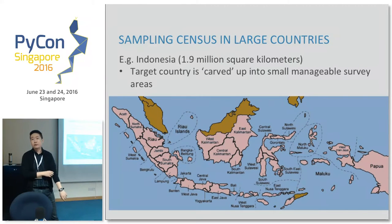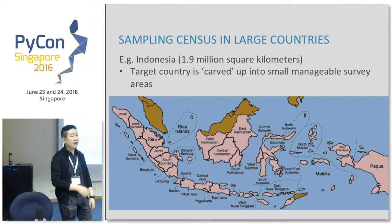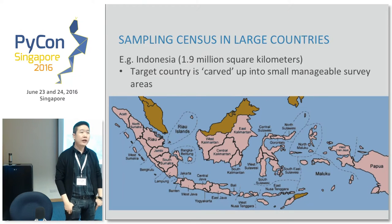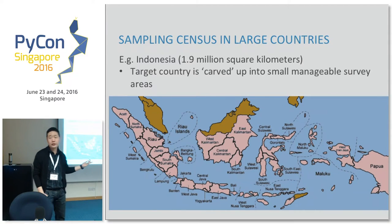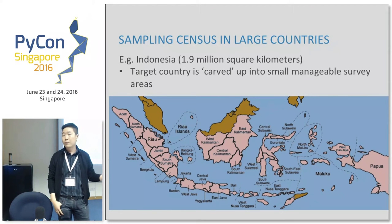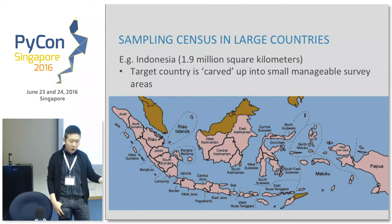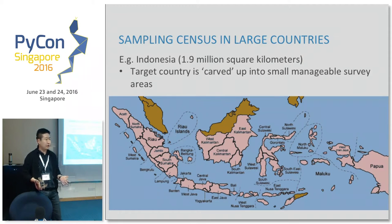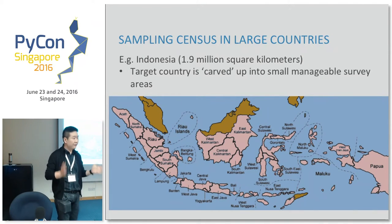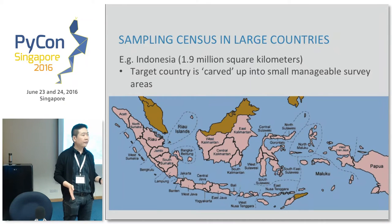For a small country like Singapore, with a land area of only 700 square kilometers, we can send a team of data collectors to comb every inch of the country. But for large countries like Indonesia, with a land area of 1.9 million square kilometers, it is practically impossible to send people to comb every inch. Moreover, Indonesia is geographically very diverse — thousands of islands — and even if possible, it would take a long time and be very costly.